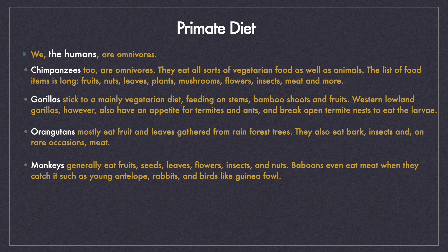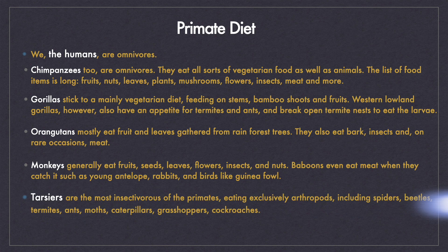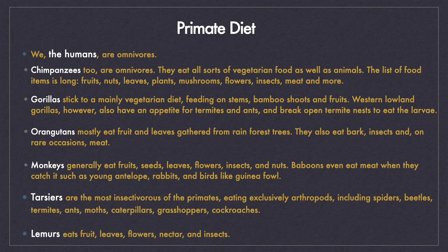Baboons eat meat when they are able to catch young antelopes, rabbits, and birds. Tarsiers are the most insectivorous of all the primates — they eat spiders, beetles, termites, ants, cockroaches, and grasshoppers. Lemurs eat fruit, leaves, flowers, nectar, and insects.